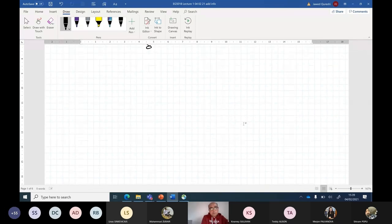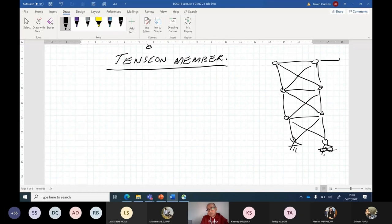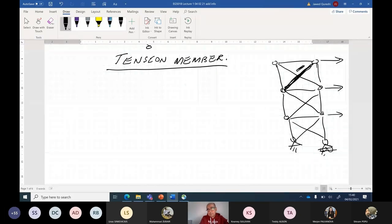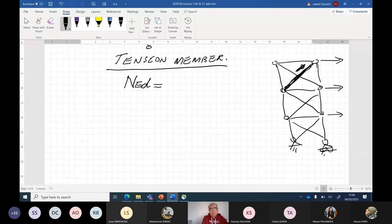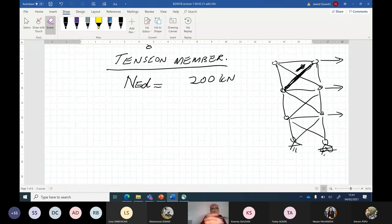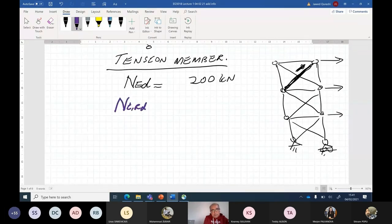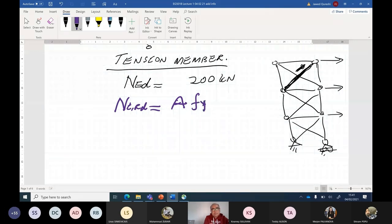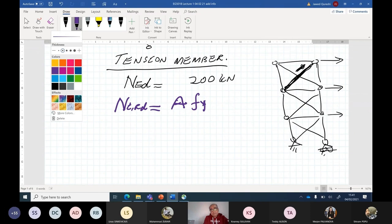Tension members and bracings—so how do we design them? I have cross bracing and loading is applied. One of the members has an applied load, NED. The applied load is 200 kilonewtons. Now I want to design this bracing. So first of all, in very simple terms, how do I find out axial capacity or NTRD or tensile capacity? The formula for NTRD—RD means the capacity—in very simple terms is AFy.